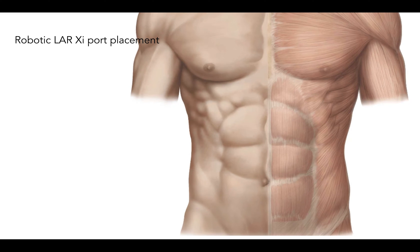Starting with XI port placement, I'm going to show a blank canvas and go through several different scenarios and talking points on exactly how to get through these cases and the strategy for port placement. Once the patient's prepped, just before I make an incision, I'll feel for the subcostal margins and then the ASIS. I use these landmarks to figure out how much docking real estate I have to go by.